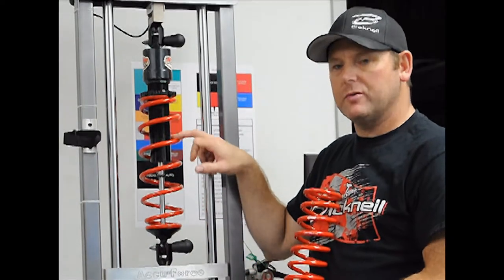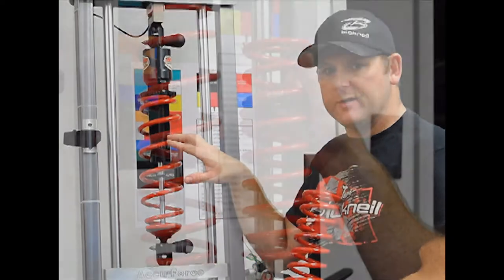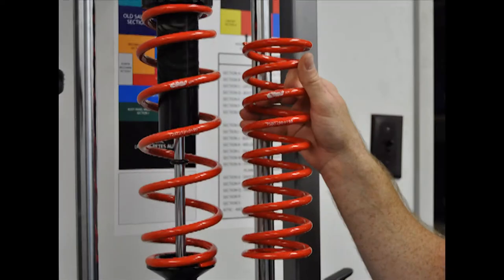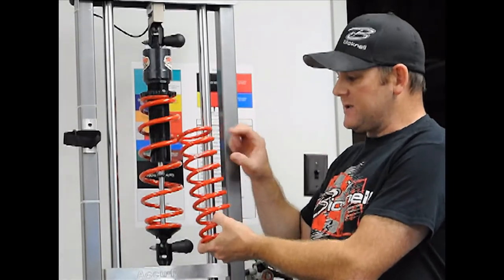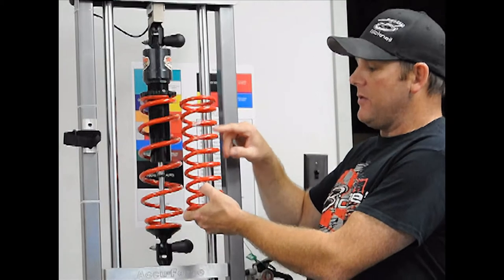This 150 is a 12 inch 25-30 series. It has an inch and a quarter between the coils. So this spring has a lot more travel than this spring does.